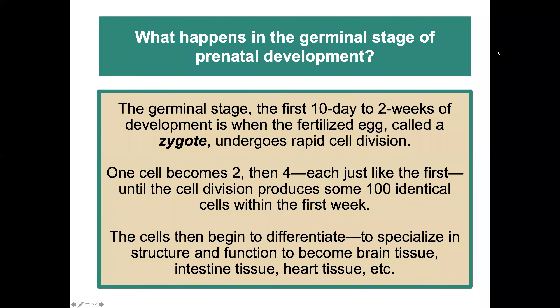The germinal stage is the first 10 days to two weeks of development, when the fertilized egg — called a zygote — undergoes rapid cell division. One cell becomes two, then four, each just like the first, until cell division produces about 100 identical cells within the first week. The cells then begin to differentiate, specializing in structure and function to become brain tissue, intestine tissue, heart tissue, and so on.